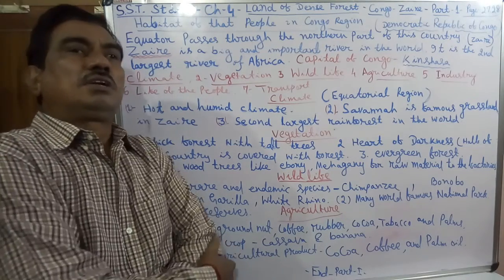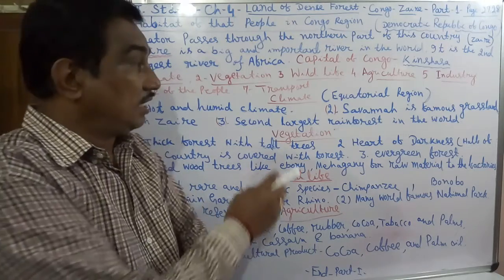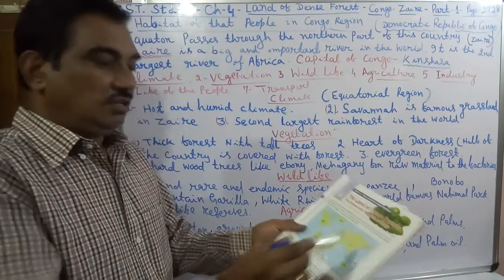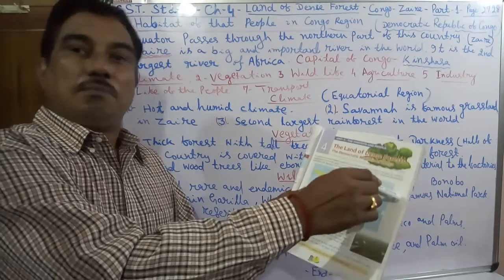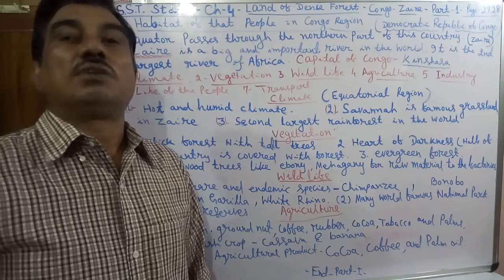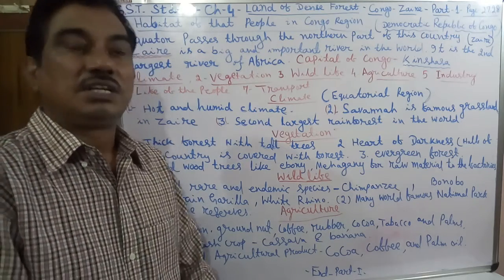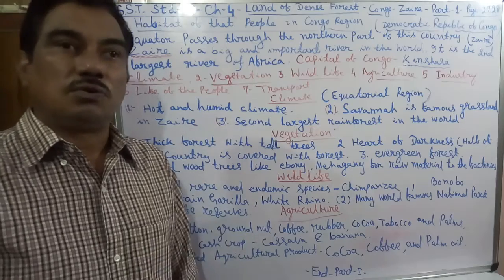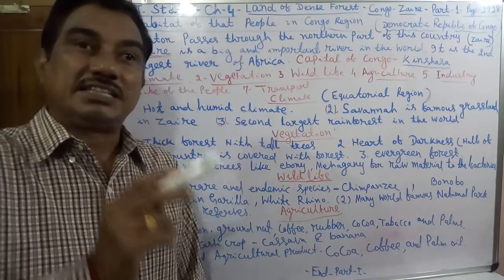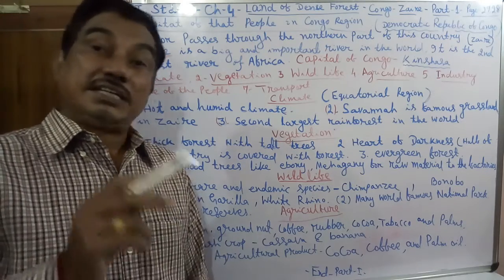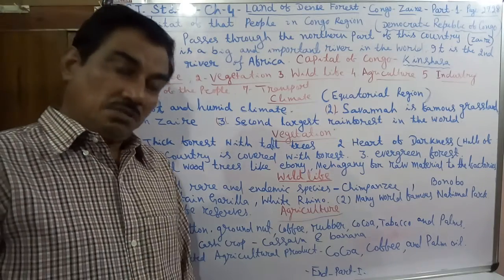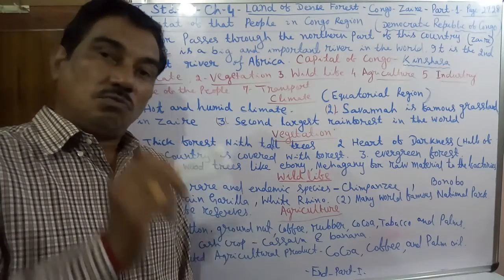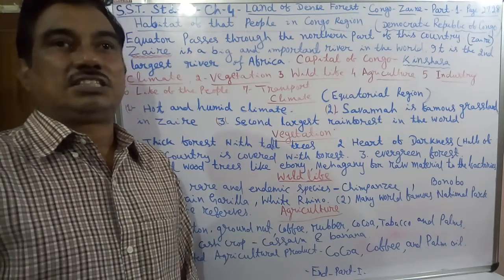First, climate. Though it is lying on the equatorial region, the climate is hot and humid, because the rays of the sun fall directly on the equatorial region. There is a grassland called Savanna, which lies in the Congo area of Africa. It is the second largest rainforest of the world — the first is the Amazon river basin, and the second is the Gyre river of Congo.